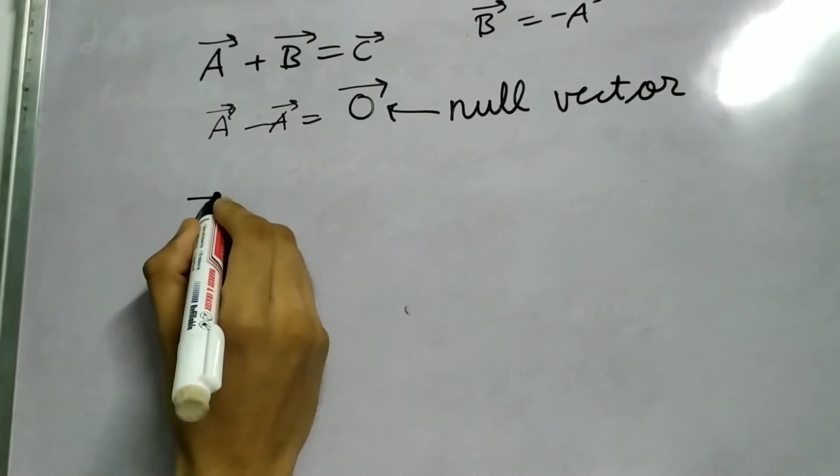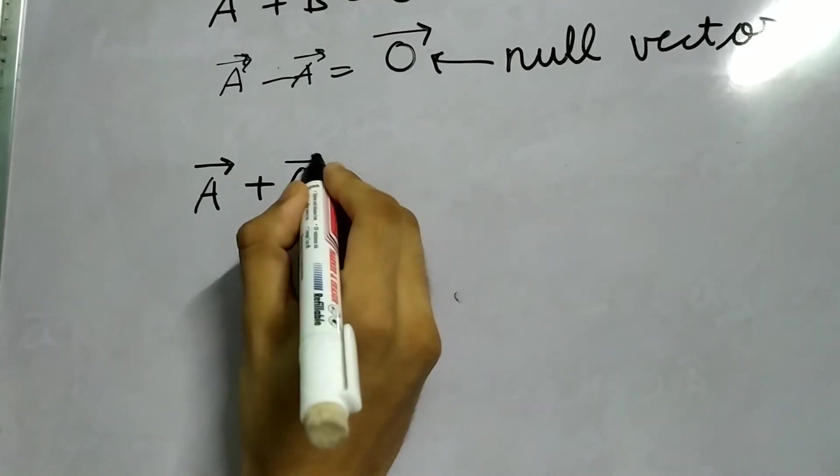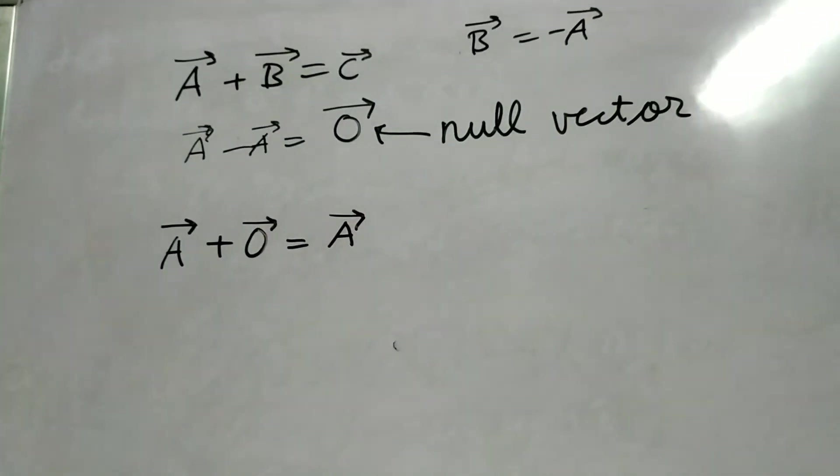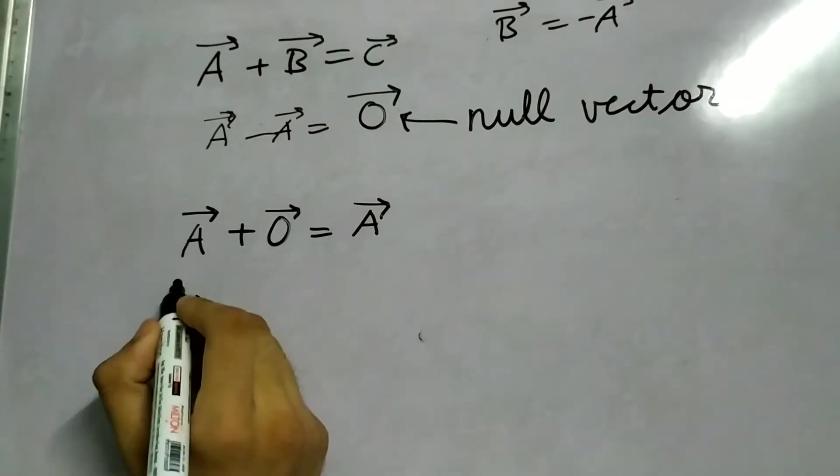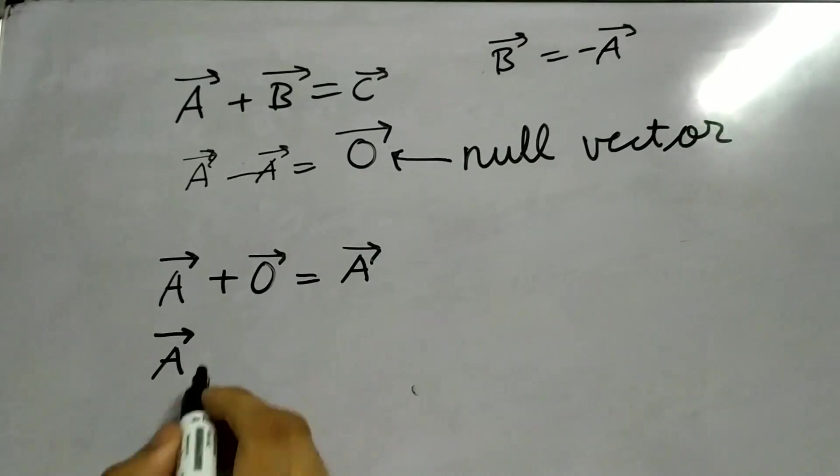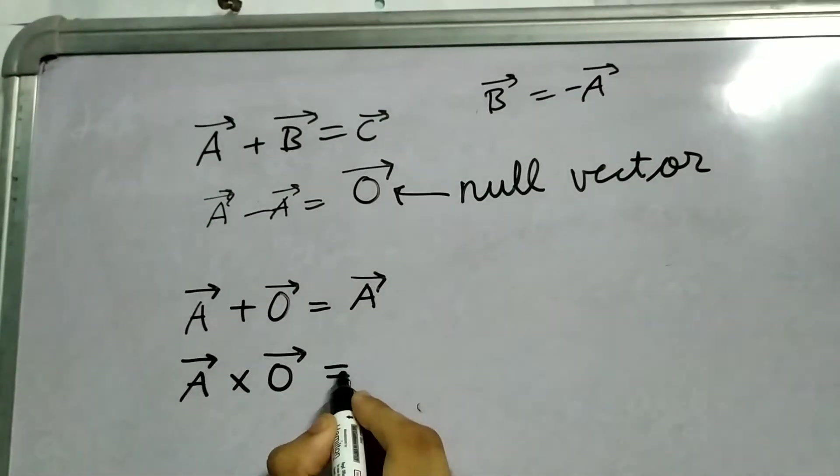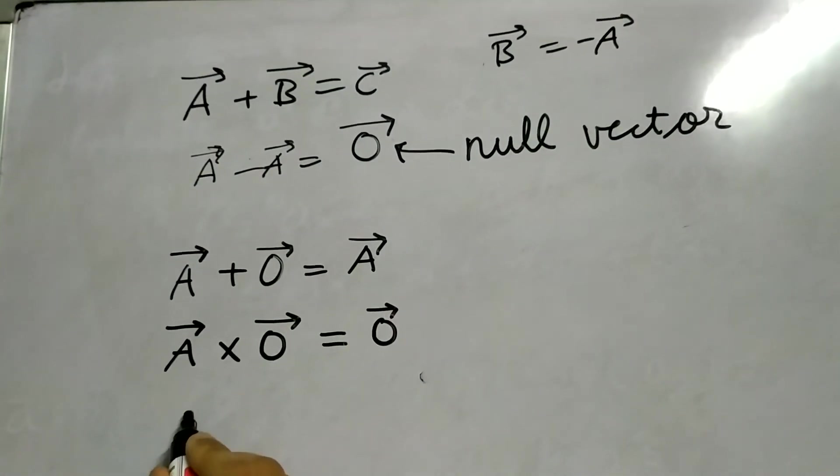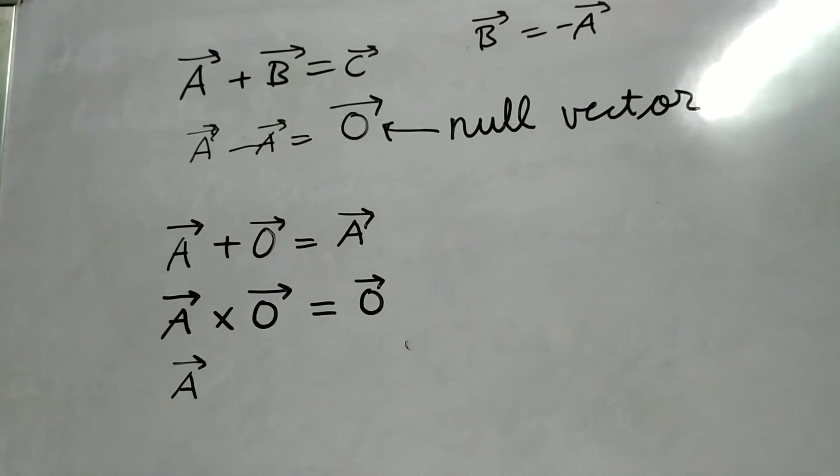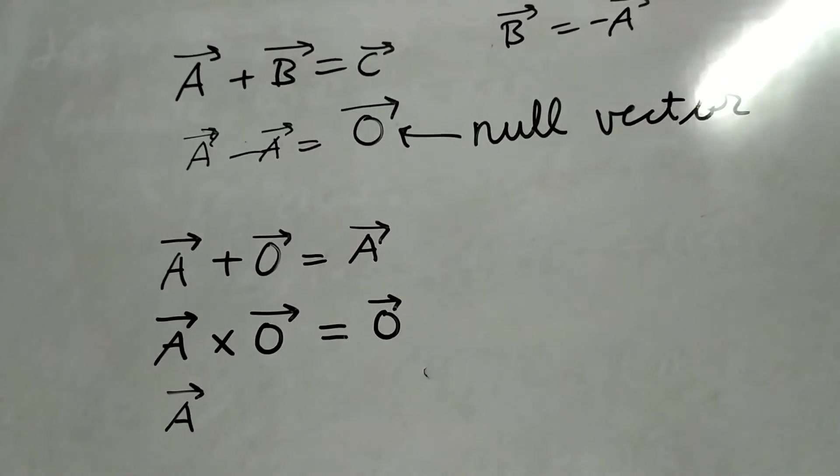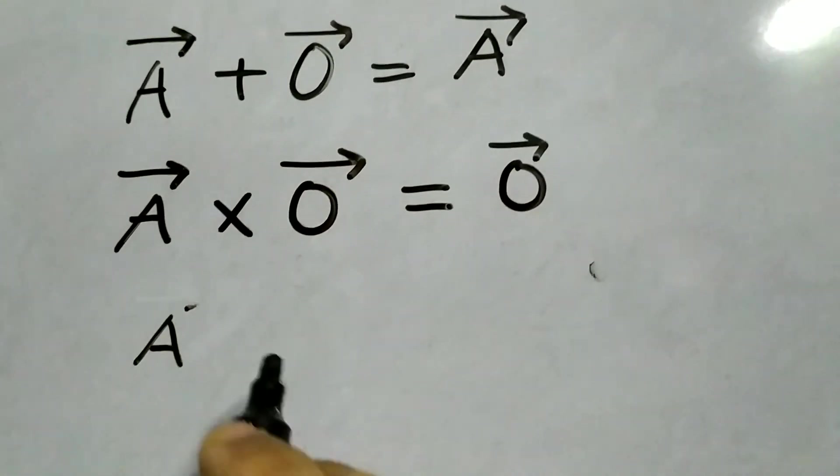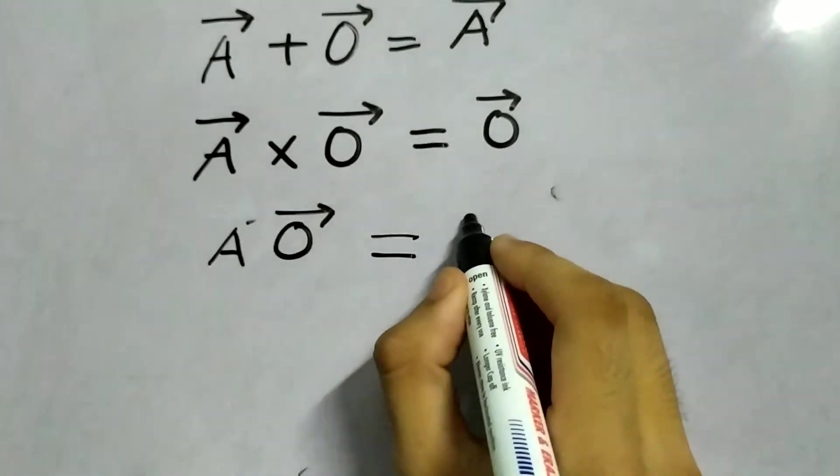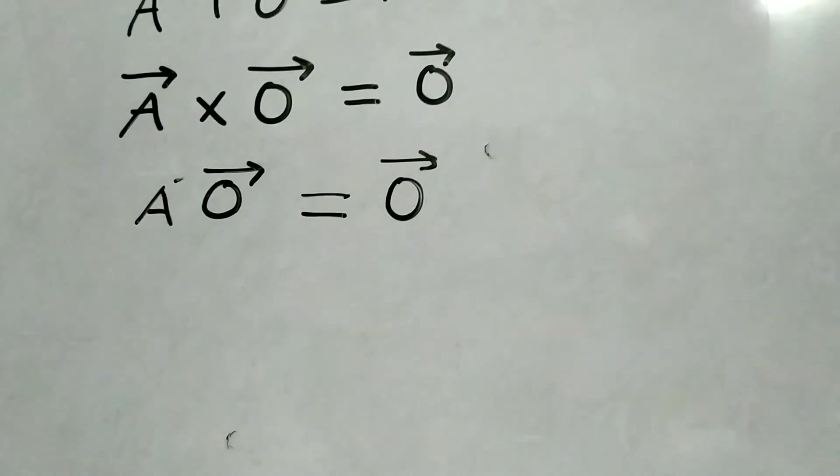And let us do some operations with a null vector. So any vector A, we add the null vector to it, we will get the same vector. The properties might seem obvious, but still, I'm writing them. Any vector A cross with null vector is null vector itself. And similarly, vector A, some magnitude A, multiplied with the null vector, it gives not zero, but the null vector.